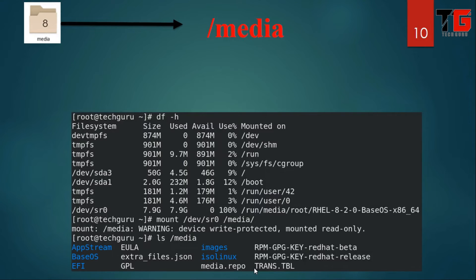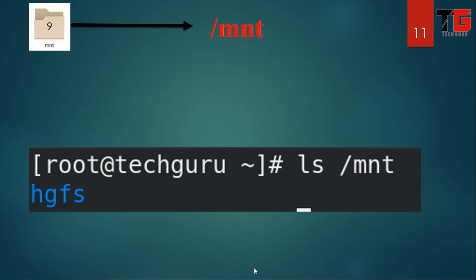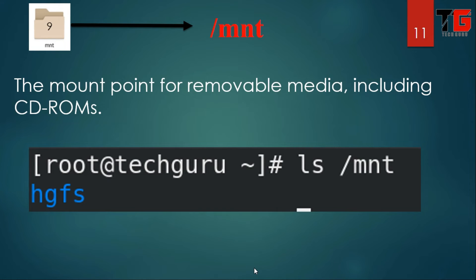Next is slash media. When you want to access some files that are not available on your computer, you need a medium to access these files. For example, if you want to access your CD-ROM, you have to mount it in a directory. In this example, we are mounting the CD-ROM in the slash media directory and accessing the files and folders available on the CD-ROM.